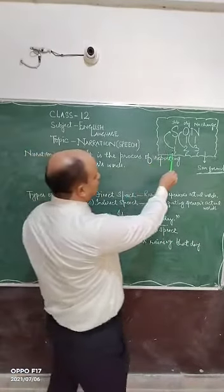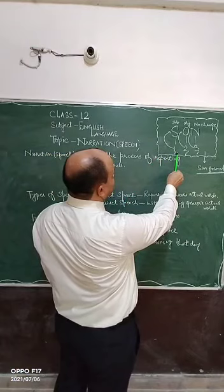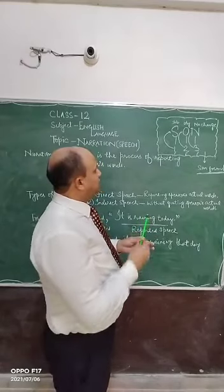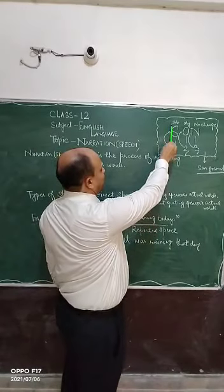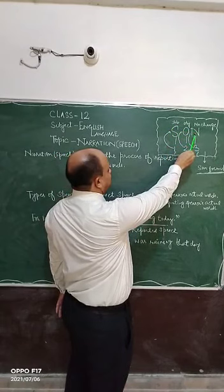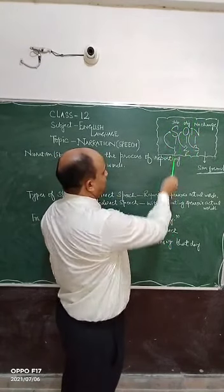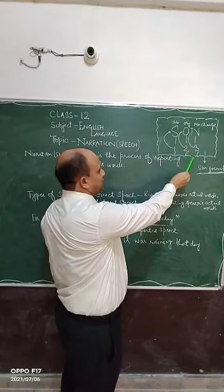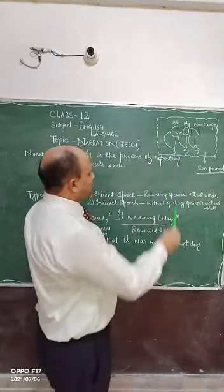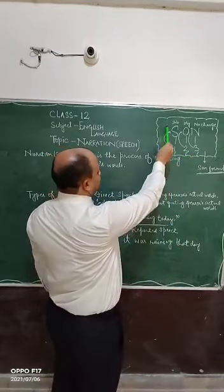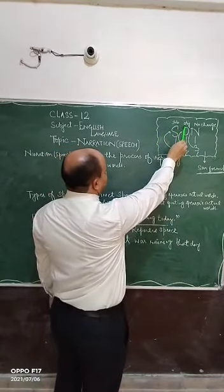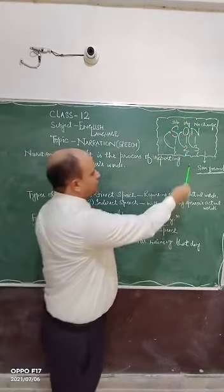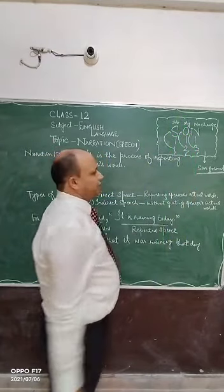For changing persons, we can use the SUN formula. S stands for subject, O stands for object, and N stands for no change. One means first person, two means second person, and three means third person. So, first person will change according to subject, second person will change according to object, and third person will never change. This formula is known as the SUN formula.